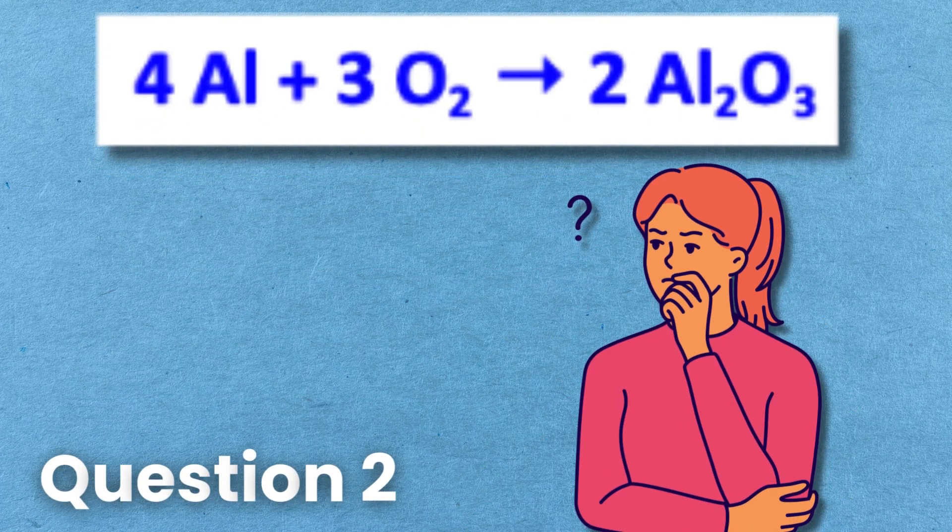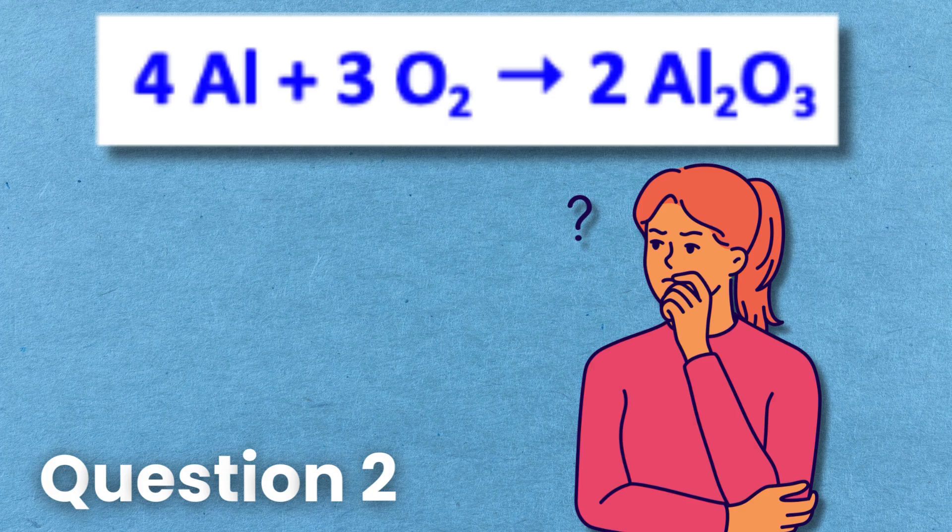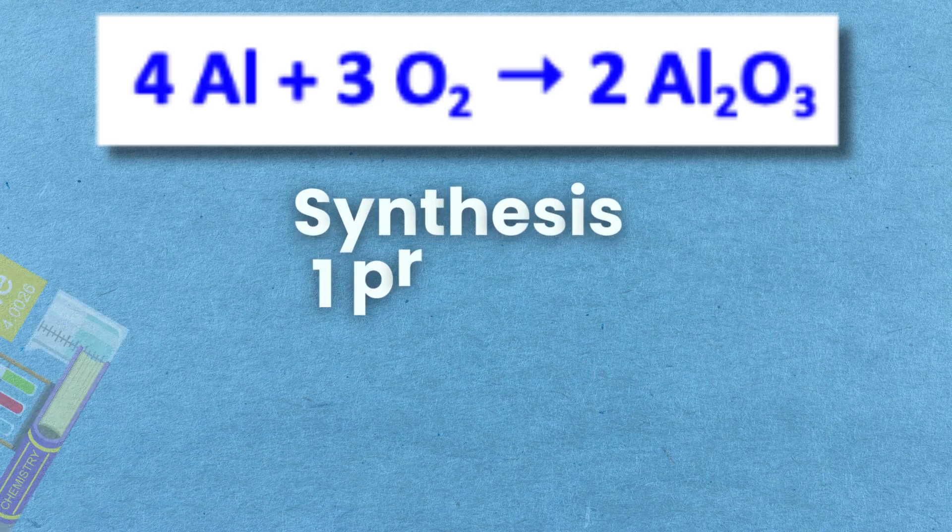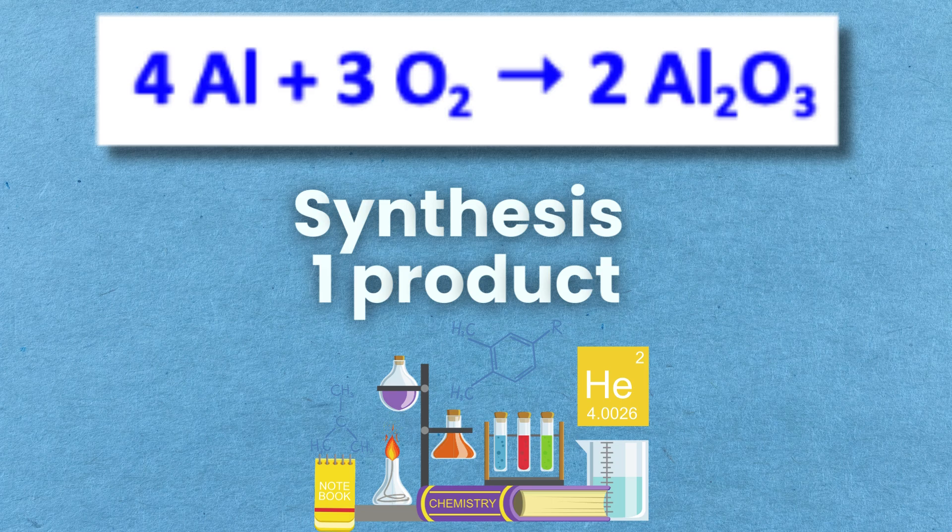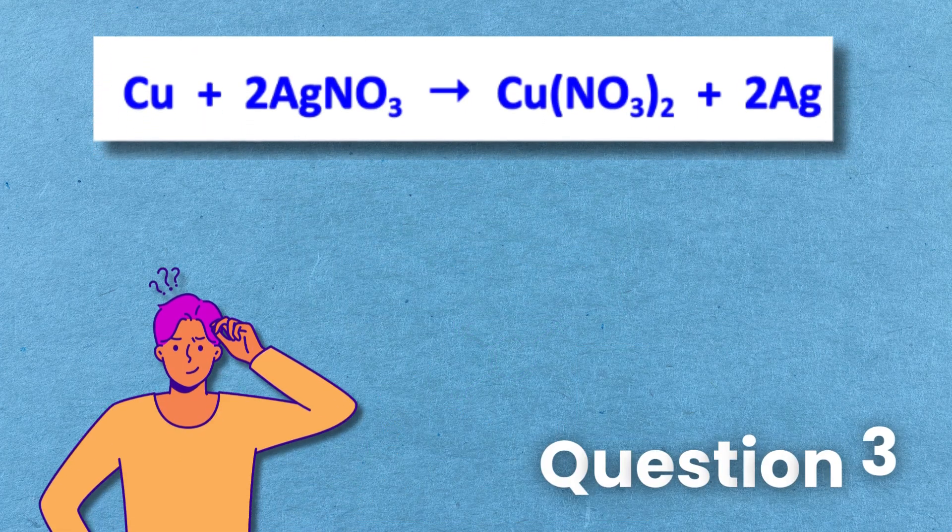Aluminum reacts with oxygen to form aluminum oxide. 4AL plus 3O2 gives 2AL2O3. That is a synthesis reaction.